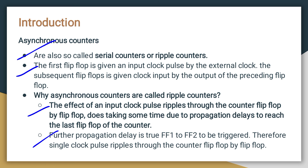The propagation delay is from flip-flop 1 to flip-flop 2, because there is no direct application of the clock. Therefore, the single clock pulse ripples through the counter flip-flop by flip-flop. The output of the first flip-flop acts as the clock for the second; the second flip-flop's output acts as the clock for the third, and so on — rippling the clock pulse output to the last one.